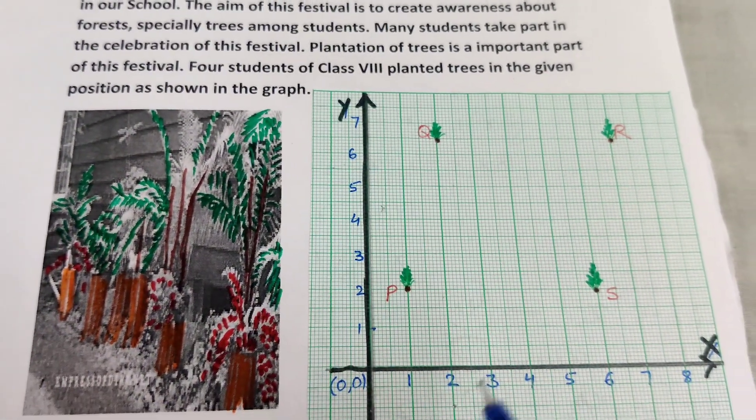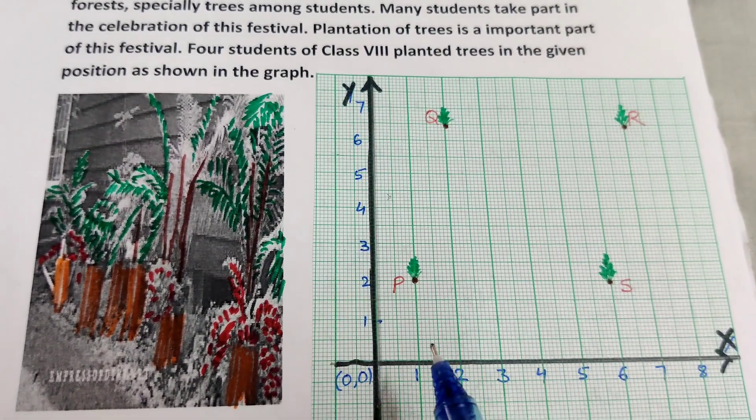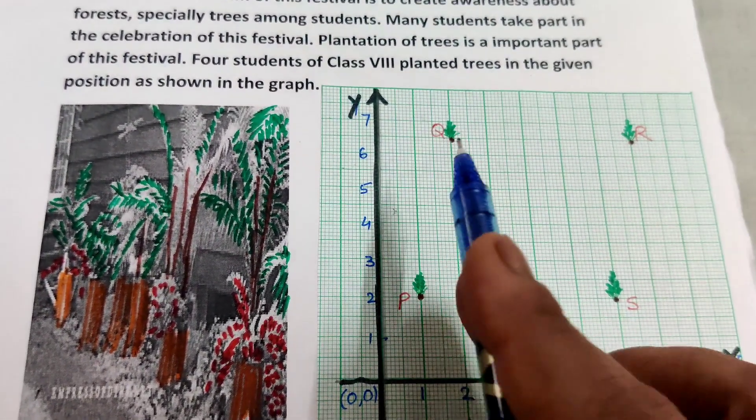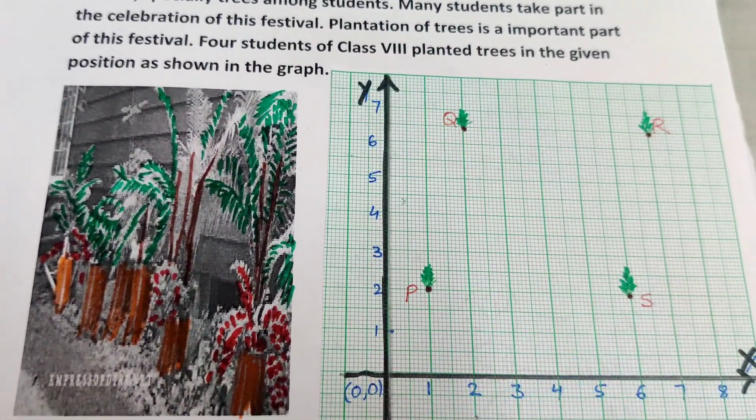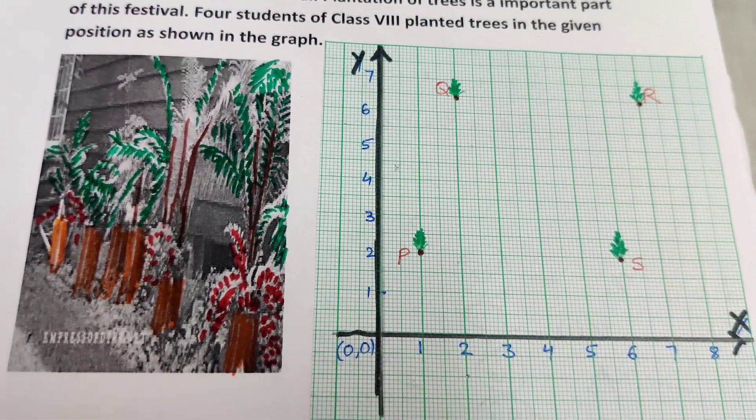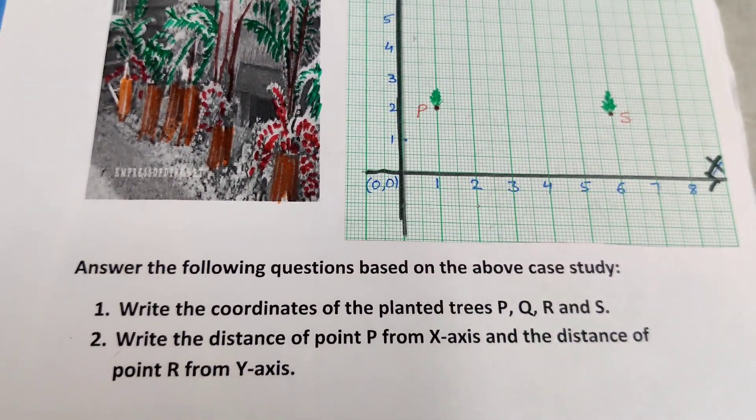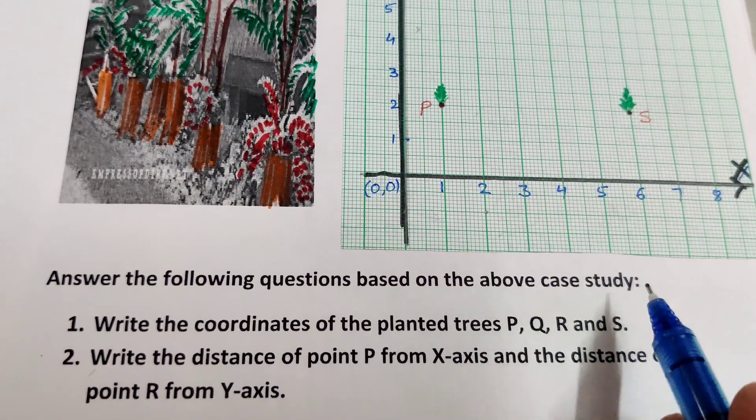This is the graph. First quadrant, the points P, Q, R and S. These are the four plants planted in such a manner. Now answer the following questions based on the above case study.